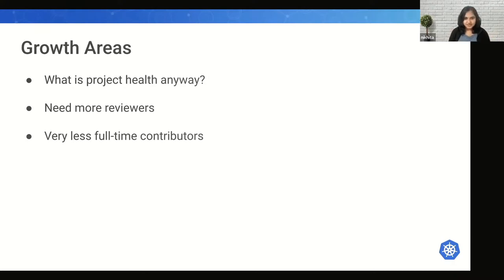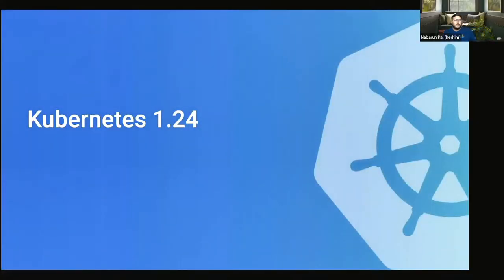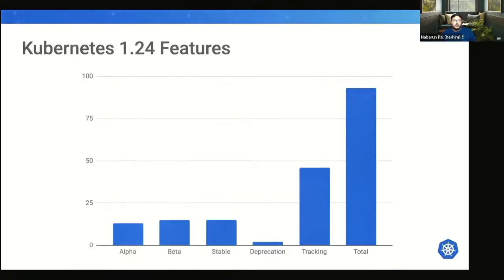That was a glimpse into the major trends in the Kubernetes project. Now I'll hand it over to Nabarun to talk about Kubernetes 1.24 and 1.25 releases. Thank you, Nikita, for that overview. I'd like to mention some key features released in Kubernetes 1.24. If we look at the kinds of features Kubernetes 1.24 shipped, there is a healthy mix: 13 alpha features, 15 beta features, and 8 stable features. Two features were also deprecated.